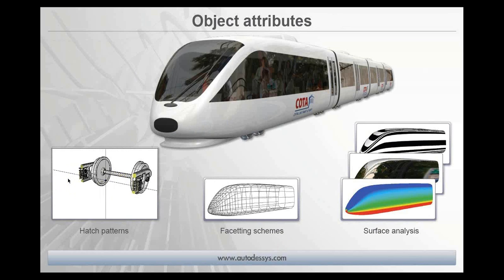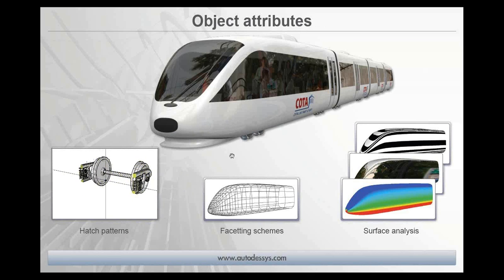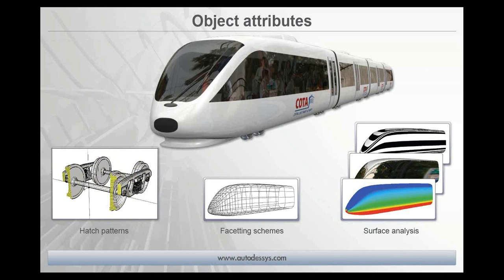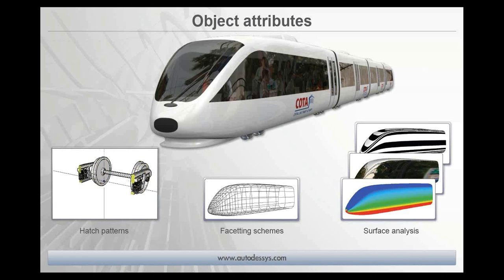There are also many new object attributes that can be assigned to your objects, such as live vector-based hatch patterns. When you cut live cross-sections of your model, you can have hatch patterns there. There are new faceting schemes which control the conversion of smooth shapes into faceted objects, and new surface analysis tools which help you analyze the smooth aesthetic appearance of your design with a real-time visual evaluation of your surfaces.